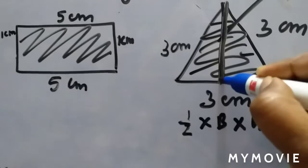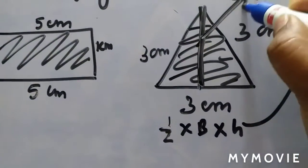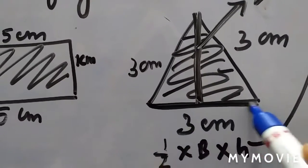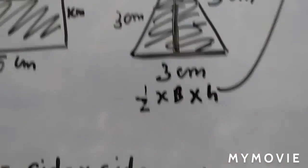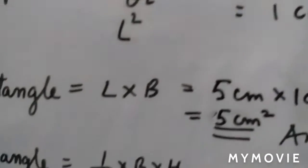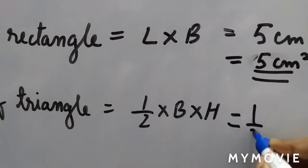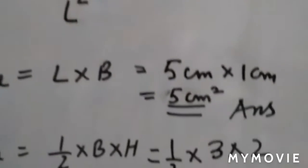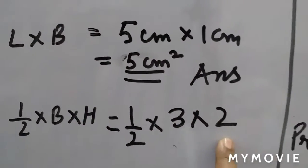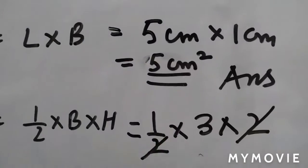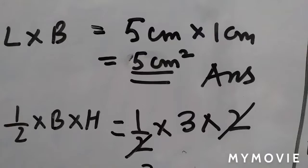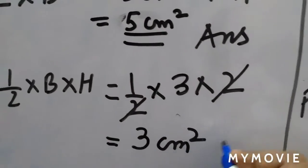The height given here is 2 centimeters, and the base at the bottom is 3 centimeters. Area of triangle will be half into base, which is 3 centimeters, into height, which is 2 centimeters. So we write half into 3 into 2. This 2 and this 2 cancel, and we have 3 and 1 remaining. So 3 into 1 is 3. Here we will also write centimeter square. So this is your answer.